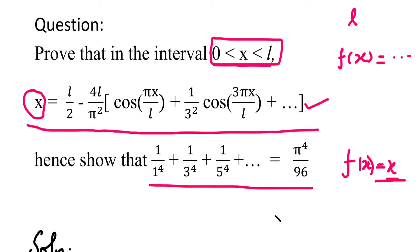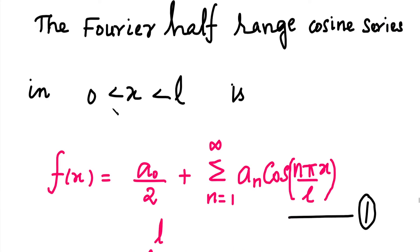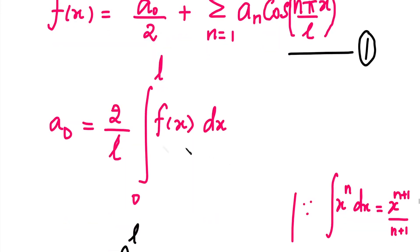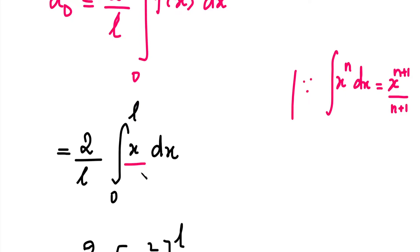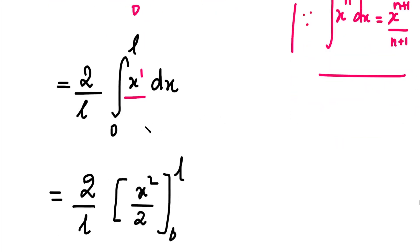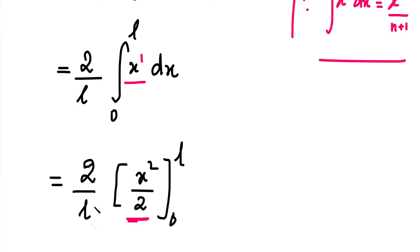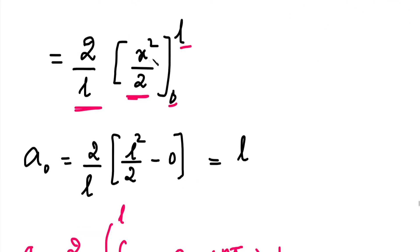First, we write the half range cosine series formula. We know that the half range cosine series in interval 0 to L is f(x) equal to a0 by 2 plus summation of an cos(n*pi/L * x), where n equals 1 to infinity. The formula for a0 is 2 by L times integral from 0 to L of f(x) dx. We substitute f(x) equals x and integrate. Using the formula integral of x^n dx equals x^(n+1)/(n+1), we get integral of x equals x²/2, with the factor 2 by L outside and limits 0 to L. Substituting the upper limit L gives L²/2.